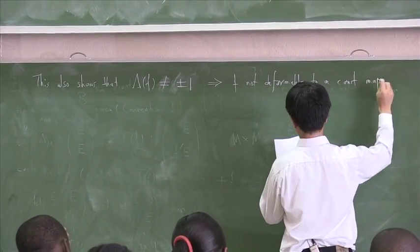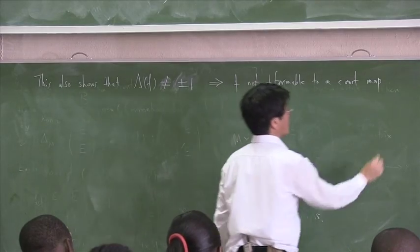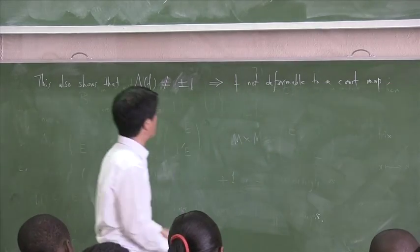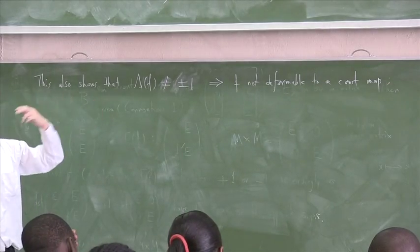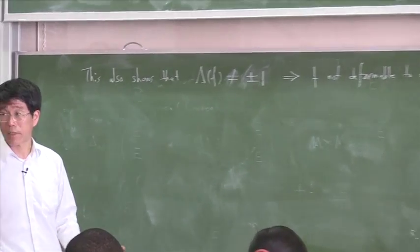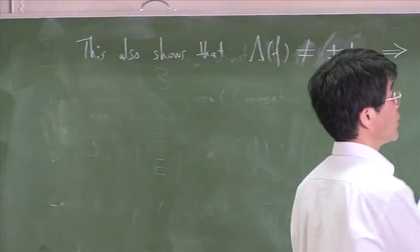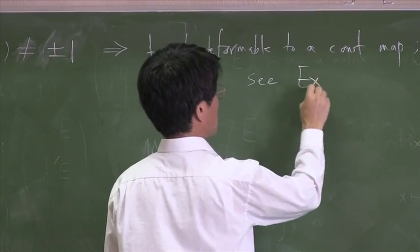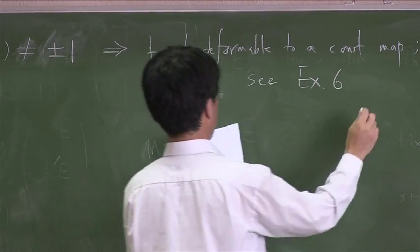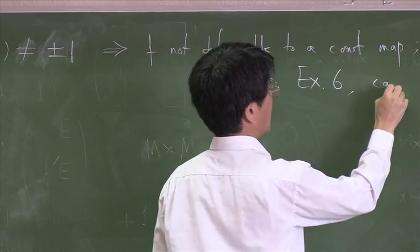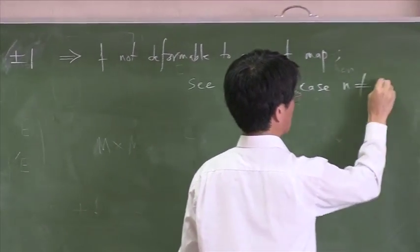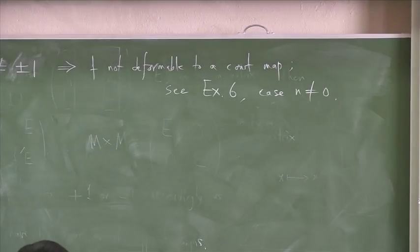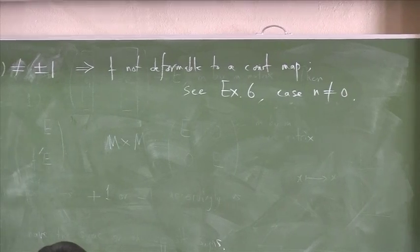The way professionals talk about it is that the Lefschetz number is an obstruction to deformability to a constant map. It obstructs some of your projects. For this connection you should look at example number six, the case when n is not equal to zero.